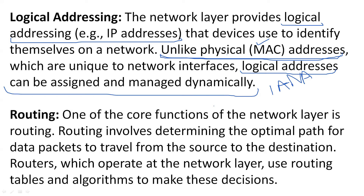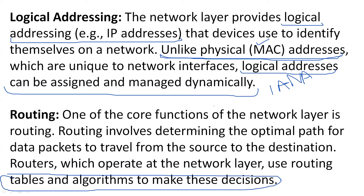If I talk about the types of routing, we have static routing and dynamic routing. In dynamic routing, there are a number of protocols and algorithms used to make decisions. There are some protocols like Routing Information Protocol, EIGRP, OSPF, and BGP. These are dynamic routing protocols in layer three that are used to determine the path.